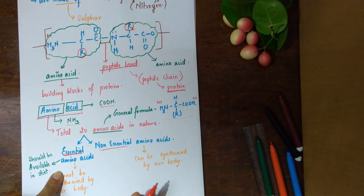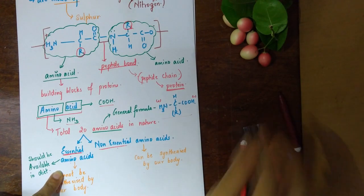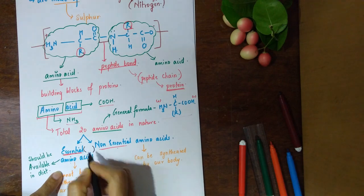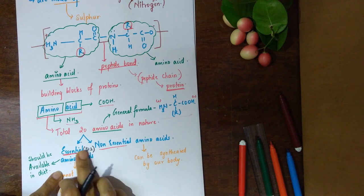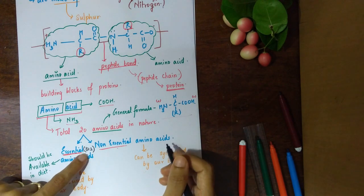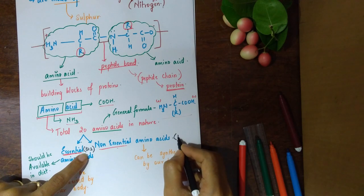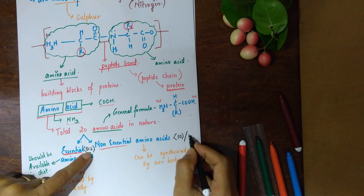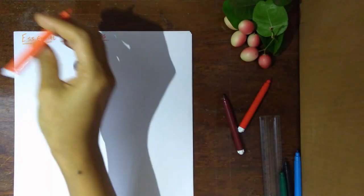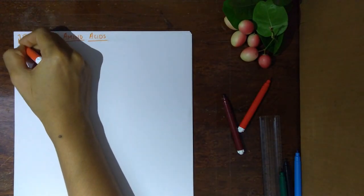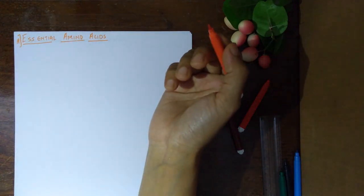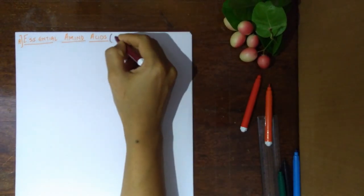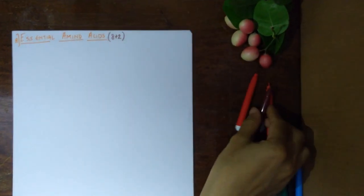There are 20 amino acids in nature, out of which some are essential and some are non-essential. If I write it in my form, I write essential as 8 plus 2, and I will explain why it is plus 2 and not 10. Non-essential I will club as 10, because I have written plus 2 here; otherwise they can be written as 12. We have two types: essential and non-essential amino acids, with this bifurcation of 8 plus 2.